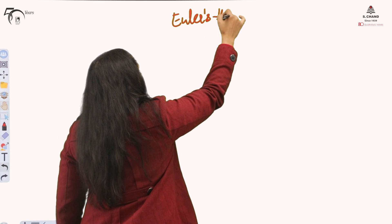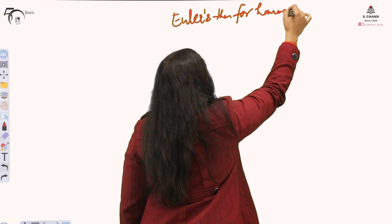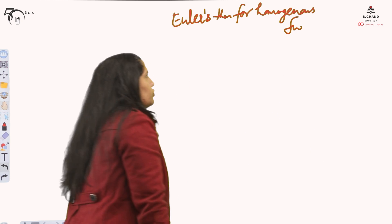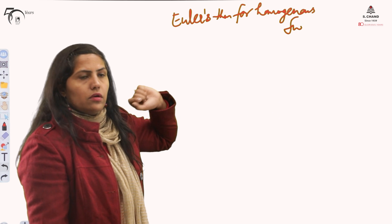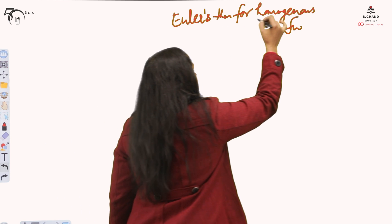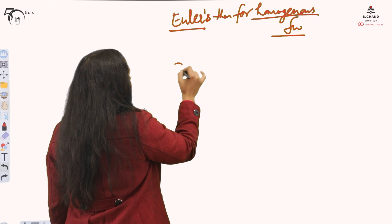Euler's theorem for homogeneous function. Obviously the function will be of two variables because this theorem is for partial derivatives. Homogeneous, what does homogeneous mean?